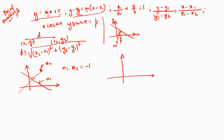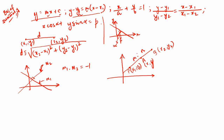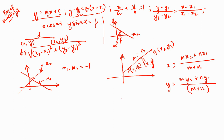The last thing we discussed: in a coordinate system, given two points P(x1, y1) and Q(x2, y2), if a point A(x, y) internally divides PQ in the ratio m:n, then x = (m·x2 + n·x1)/(m + n) and y = (m·y2 + n·y1)/(m + n).